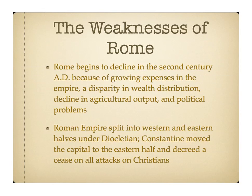We started to see some weaknesses in Rome. Rome begins to decline in the second century AD. There were many internal problems — growing expenses in the empire. The empire was just too big, too many lands to control and manage. The military was so big everyone had to get paid, and there were just too many expenses. There was a disparity in wealth distribution — really rich people and really poor people — and that breeds discontent. There was a decline in agricultural output; the farms were just not producing a lot of food anymore. And political problems — you saw a lot of leaders in Rome competing for power, which was really threatening the stability of the empire.